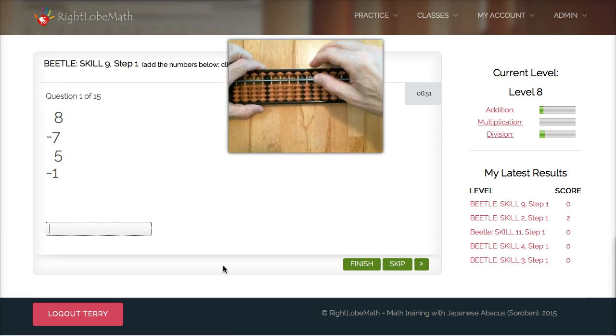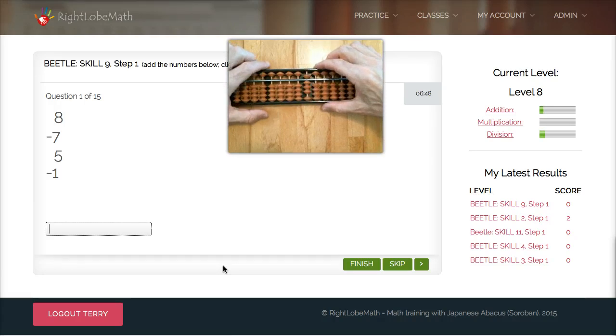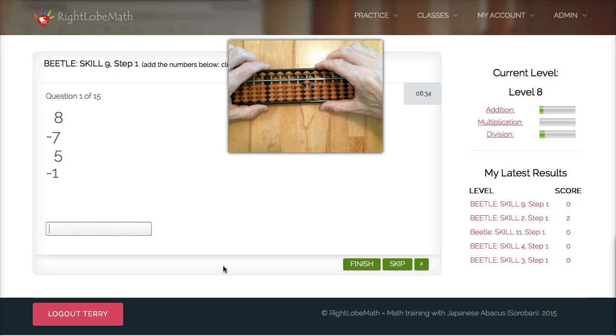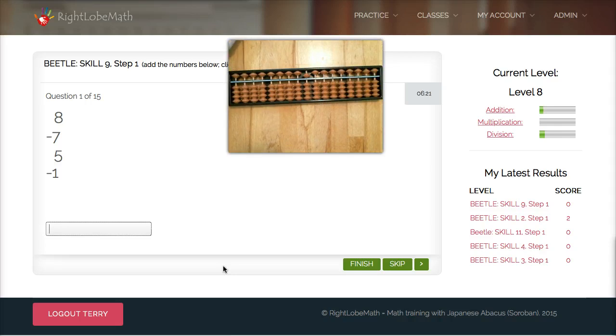So for an eight I can just simply pinch a five and three ones, then I need to subtract seven so I could just reverse pinch that seven or I could take the five and then the two ones with my index finger. Next I need to add five so I do that pulling it down with my index finger and minus one I take that with my index finger as well for a final answer of five.